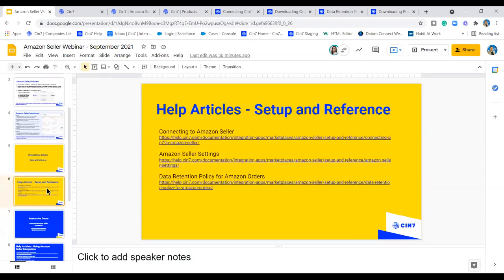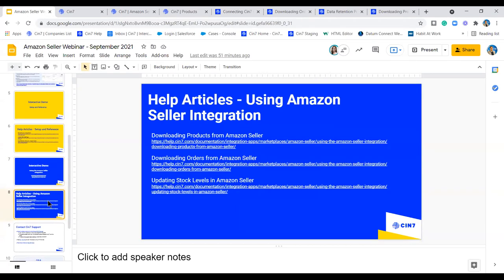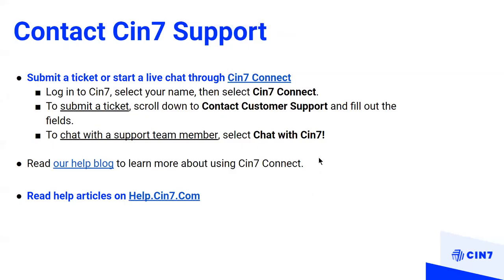In the slide deck I've provided help articles covering connecting to Amazon Seller, Amazon Seller settings, the data retention policy for Amazon orders, and interactive demo topics including downloading products, downloading orders, and updating stock levels in Amazon Seller. These help articles are available for reference. For support, you can reach out via live chat, submit a ticket, or read the help blog for guidance on logging a ticket or chatting with a support team member.